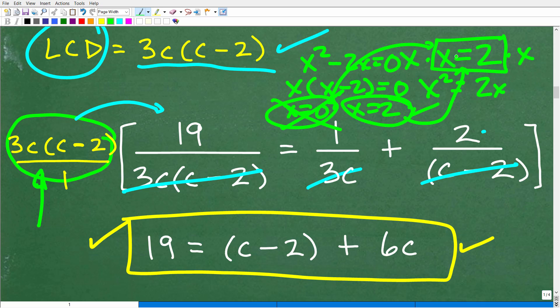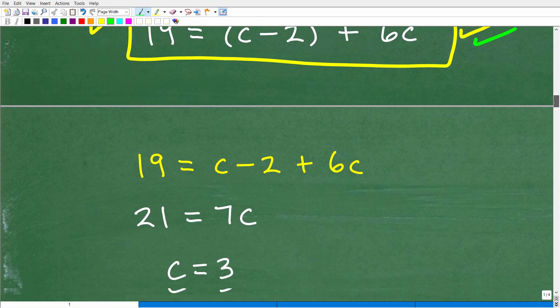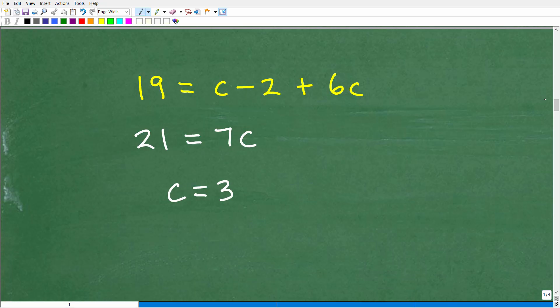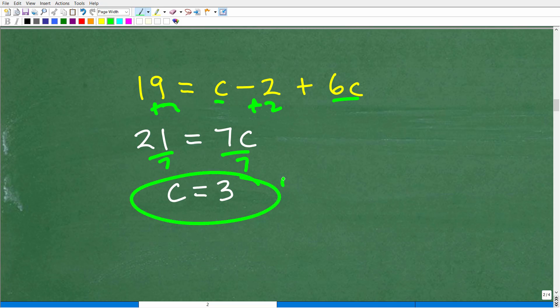All right. So hopefully you learned something there. Now let's move on to solve this lovely basic algebra linear equation. All right. So 19 is equal to C minus 2 plus 6C. Pretty straightforward stuff here. So we're going to go ahead and combine like terms. So we have C, 6C, that's 7C. We'll add 2 to both sides of the equation. So we have 21 is equal to 7C. And then we'll divide both sides of the equation by 7. We get C is equal to 3.